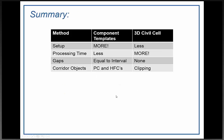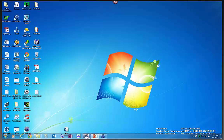Here's a quick summary: component templates mean more setup but less processing time, with gaps equal to the intervals, and corridor objects are point control and horizontal feature constraints. For the 3D civil cell, there's less setup but longer processing time, no gaps, a cleaner model, and corridor objects are clipping objects. It's going to depend on the number of driveways on your project. We've done a project with component templates that had over 200 driveways, and some 3D civil cell projects with 30 or 40. It really depends on your preference and what processing time you're willing to live with.